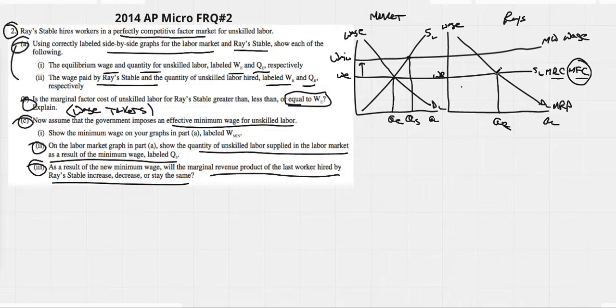It is the idea that here's where we're hiring. Now we're hiring here when the minimum wage goes up. Understand that as we hire fewer workers, this worker, the last worker hired at that point, would have a higher marginal revenue product. It says increase.